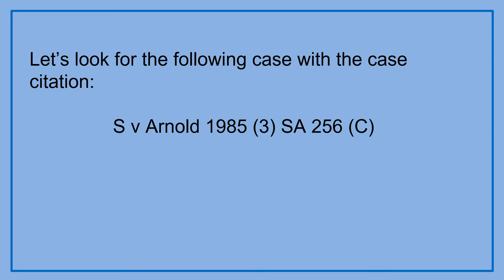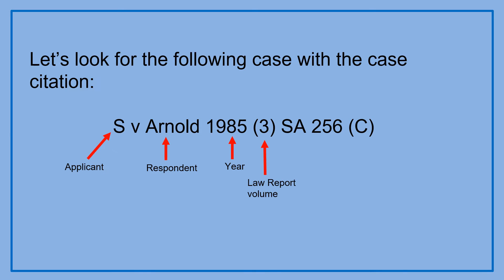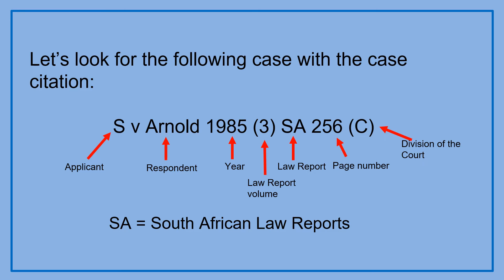Let's look for the following case with the case citation: S v Arnold 1985 3 SA 256 C. S refers to the applicant, Arnold refers to the respondent, 1985 refers to the year, 3 refers to the law report volume, SA refers to South African Law Reports, 256 refers to the page number, and C refers to the court division — Cape Provincial Division.